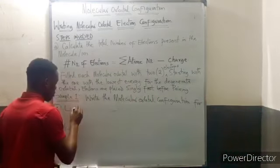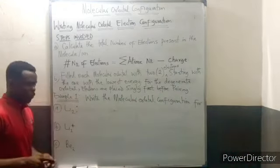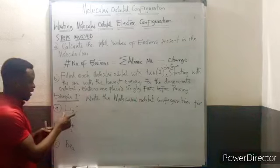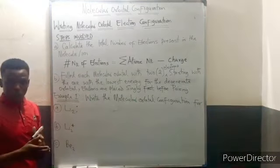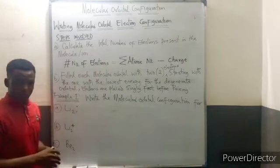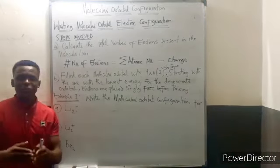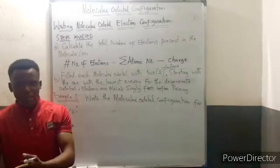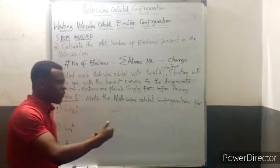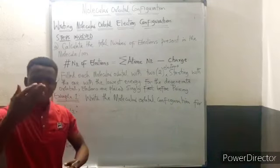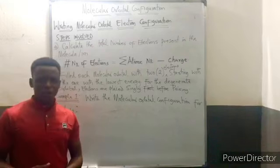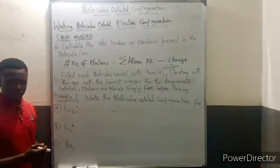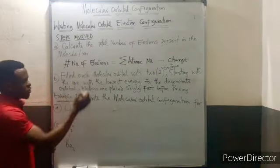Let's take an example — writing the molecular orbital configuration for Li₂. In exams you won't have time to combine from scratch; use the given order. Molecular orbitals always start from bonding 1s, antibonding 1s, bonding 2s, antibonding 2s, and so on. The number of electrons in the molecule determines how many molecular orbitals you will use. First, let's determine the number of electrons.